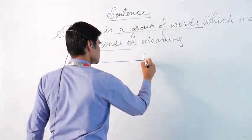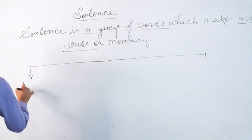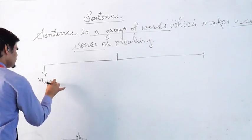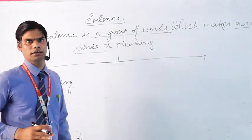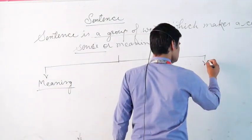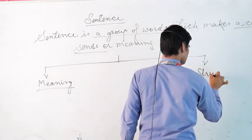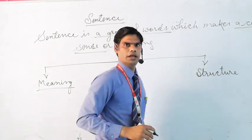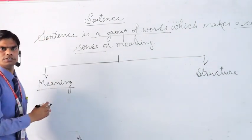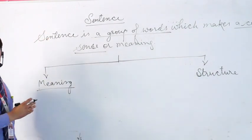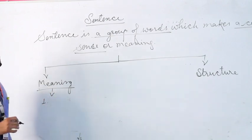Sentences can be classified in mainly two ways — two parts. The first is sentences based on meaning, and the second is sentences based on structure. We will first study sentences based on meaning.